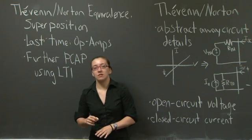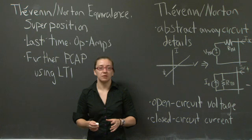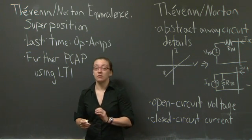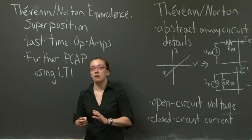Thevenin and Norton equivalents is the idea that if you have a very complex circuit but it's still an LTI circuit, you can express it using a linear curve.